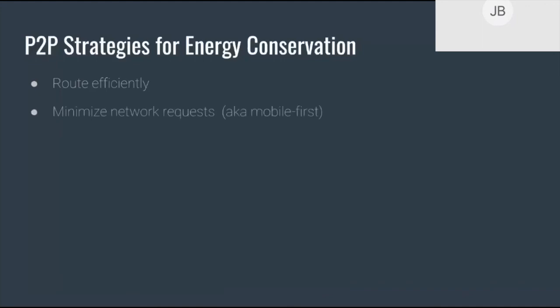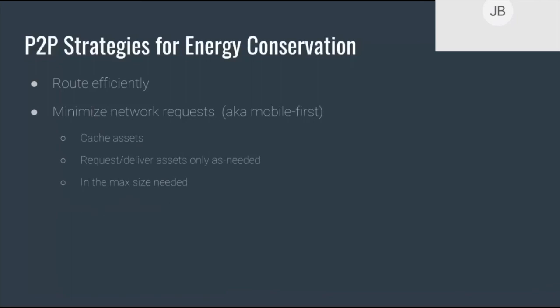Minimize network requests in the first place. This is going to sound a lot like the other advice you get for a normal client-server modeled website or app. The laws of physics still apply here, so conserving energy is still conserving energy. You can minimize network requests by caching assets locally, only requesting or delivering assets as they are needed, and only using the maximum size that is needed. But there's an additional category of strategy that applies specifically to peer-to-peer, and I find it to be the most inspirational aspect of this topic.